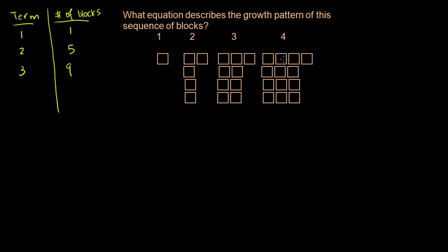On the fourth term, same thing. The third term is just that previous pattern, and then we added another column of four blocks, so we added four more. That gives us 13 blocks. Our fourth term is 13. So let's see if we can come up with a formula, either looking at the graphics or looking at the numbers themselves.